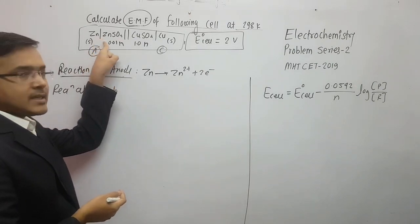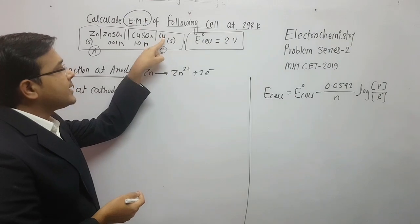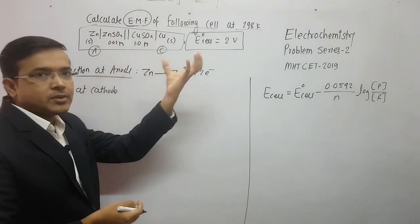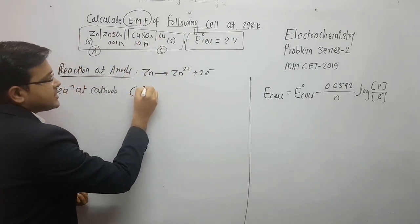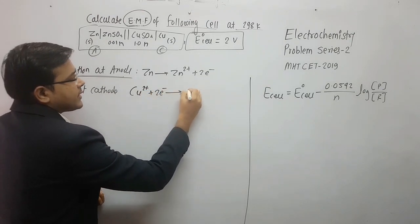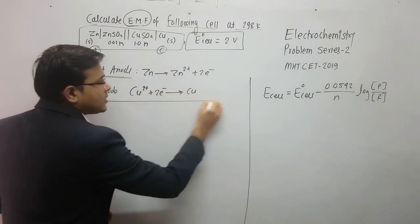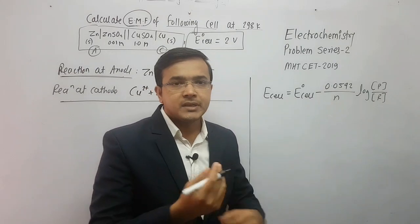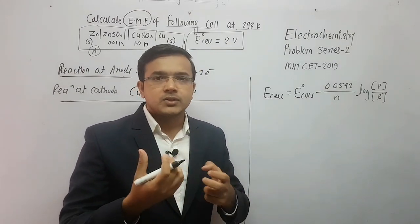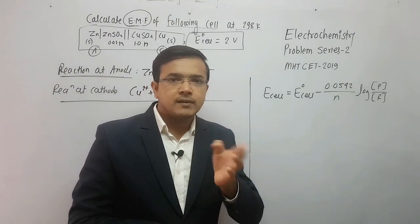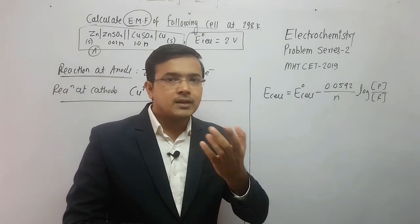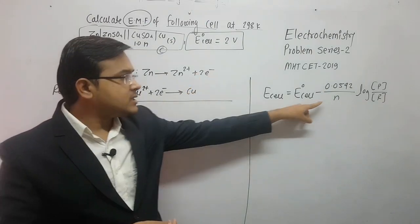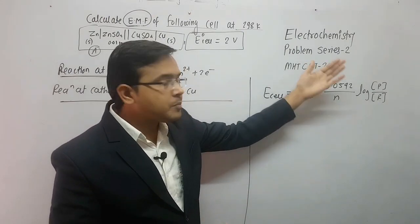At the anode, oxidation occurs — loss of electrons. The metal zinc gives Zn2+ plus 2 electrons. At the cathode, Cu2+ gains electrons to form copper. Since N equals 2, we will use the product and reactant concentrations accordingly.